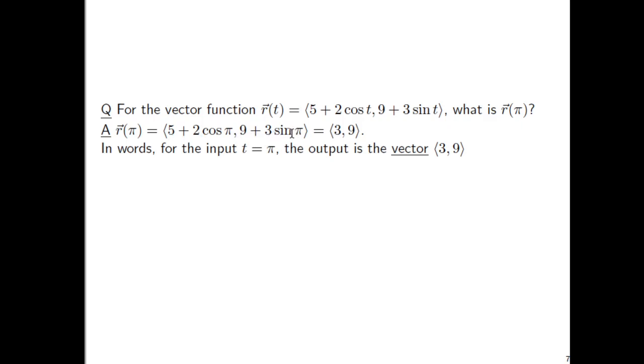And so you really have here 5 minus 2 simplifies to 3. Then, 9 plus 3 sine of pi. Well, sine of pi is equal to 0. So you're just left with 9. 9 plus 0 is 9. So you end up, when the input is pi, the output is the vector (3, 9).